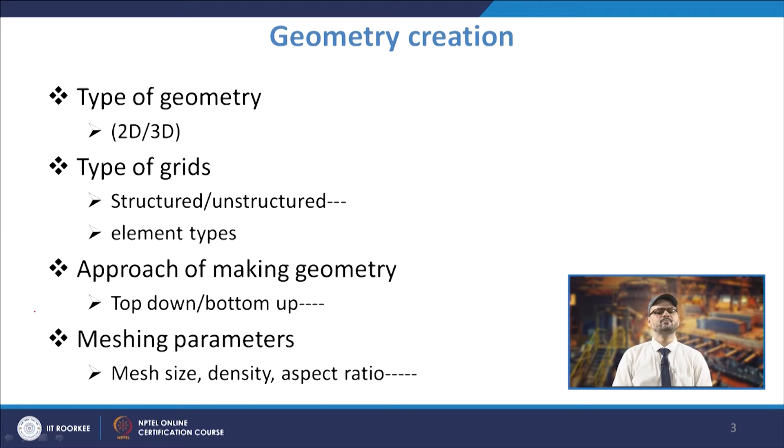The geometry needs to be divided into small elements. You apply the conservation equations and get algebraic expressions from those equations when you apply different discretization schemes. Basically you are converting the whole domain into small elements — dividing the domain into different control volumes — and then you start the work.